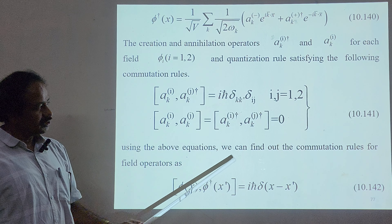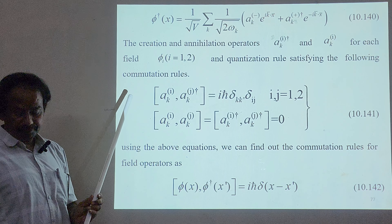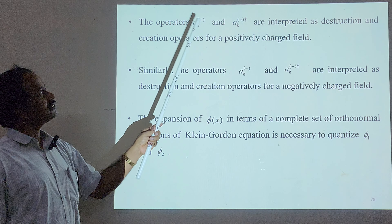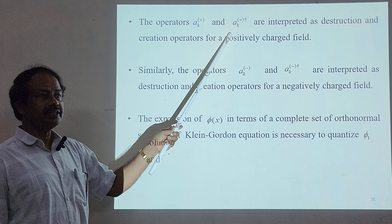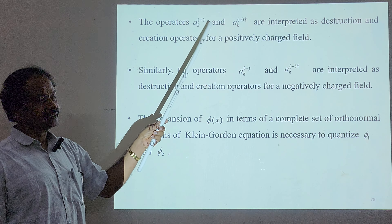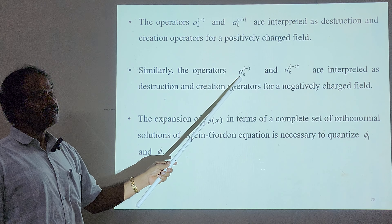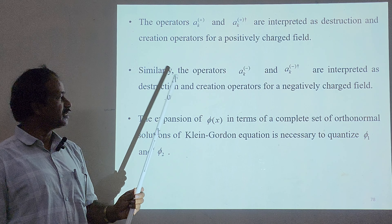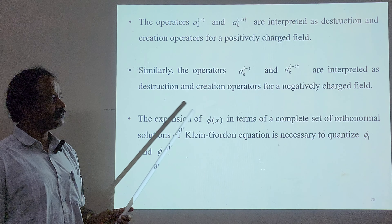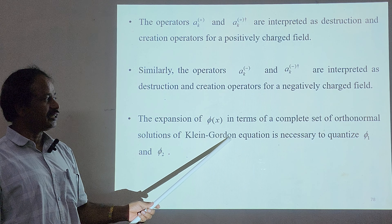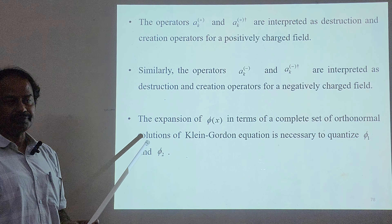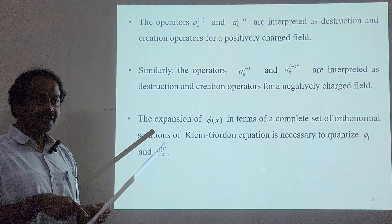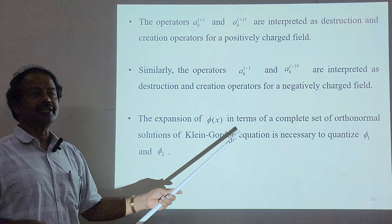We are going to use these commutation rules to simplify the field equations. The operators ak+ and ak+† are interpreted as destruction and creation operators for positively charged particles, while ak− and ak−† are the destruction and creation operators for negatively charged particles. Expanding phi(x) in terms of a complete set of orthonormal solutions of the modified Klein-Gordon equation is necessary to quantize phi₁ and phi₂ and thereby eliminate the negative probability.